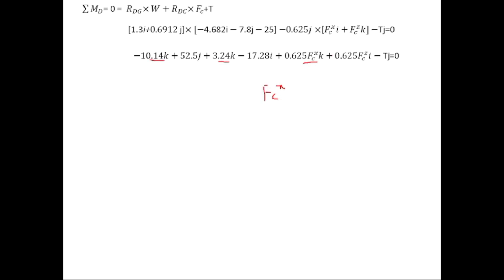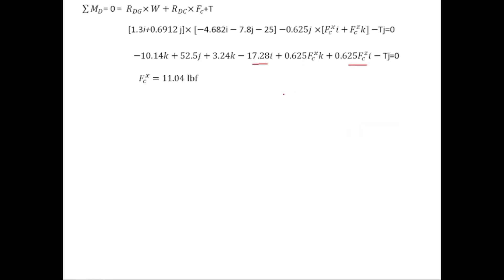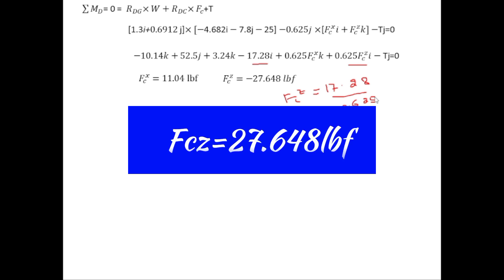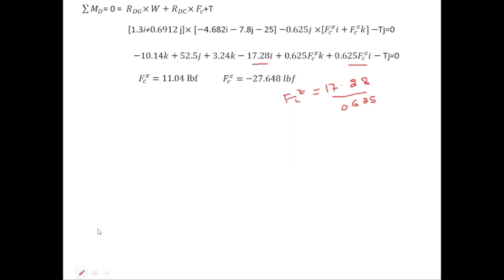Taking the k-components of the moment equation and setting equal to zero: (−10.14 + 3.24) + 0.625·FcX = 0, so FcX = (10.14 − 3.24)/0.625 = 11.04 lbf. Taking the i-components: −17.28 − 0.625·FcZ = 0, so FcZ = 17.28/0.625 = 27.648 lbf (positive). The total reaction at C: Fc = √(11.04² + 27.648²) = 29.8 lbf.